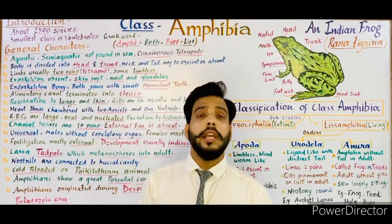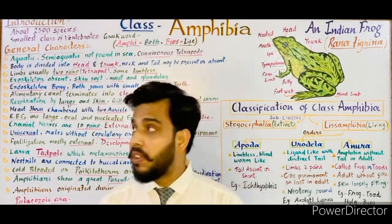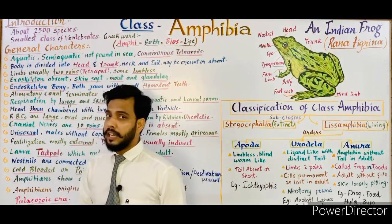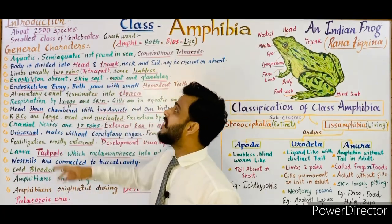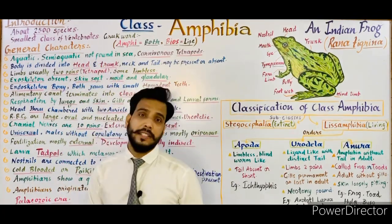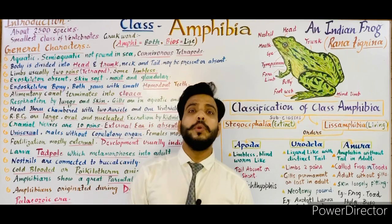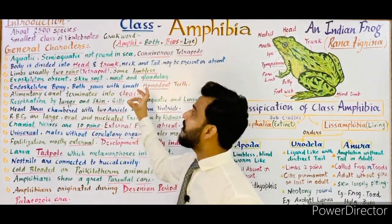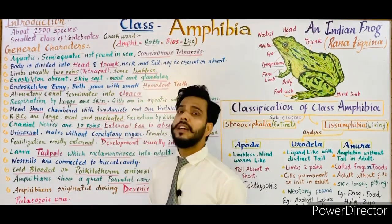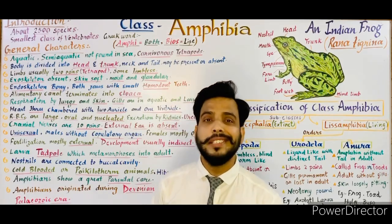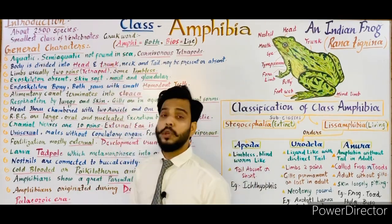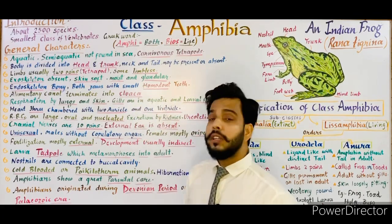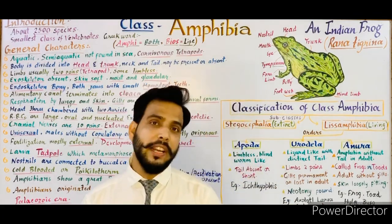In class Amphibia, there are about 2500 species. It is the smallest class of vertebrates — vertebrates being a subphylum of phylum Chordata. Amphibia is the smallest vertebrate class, consisting of only 2500 species.